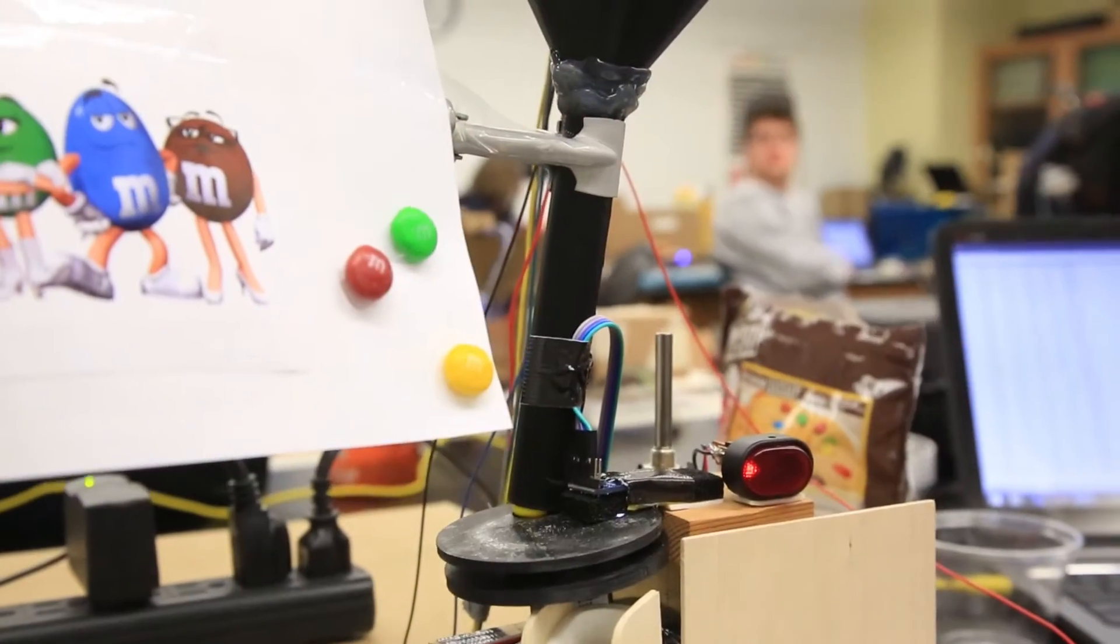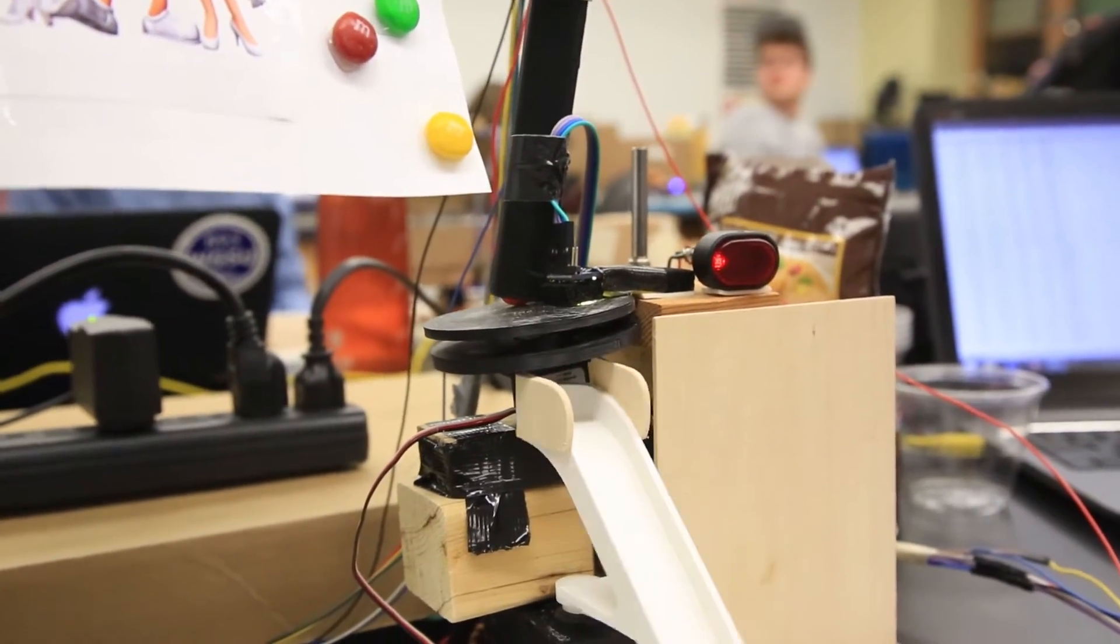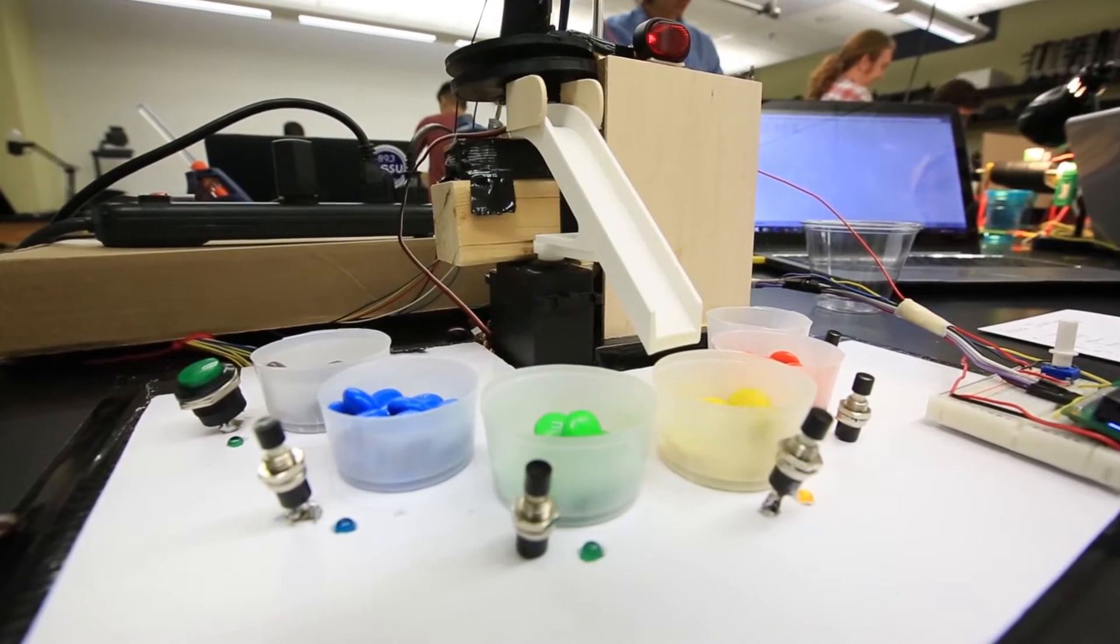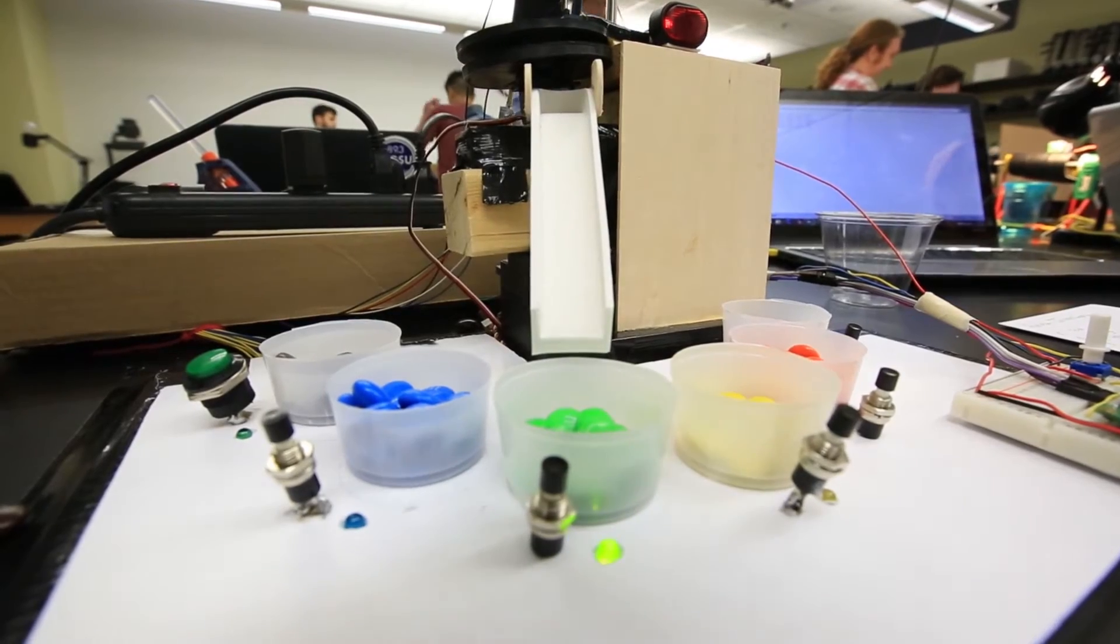There's an RGB color sensor that will detect the color, and then servo motors and stepper motors are all used. Potentiometers, buttons, switches, LEDs—we had to use all those components in our projects.